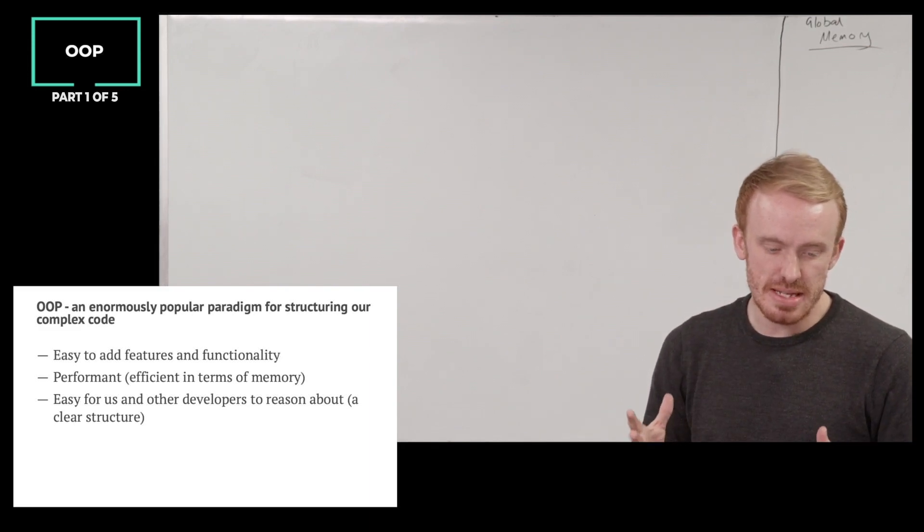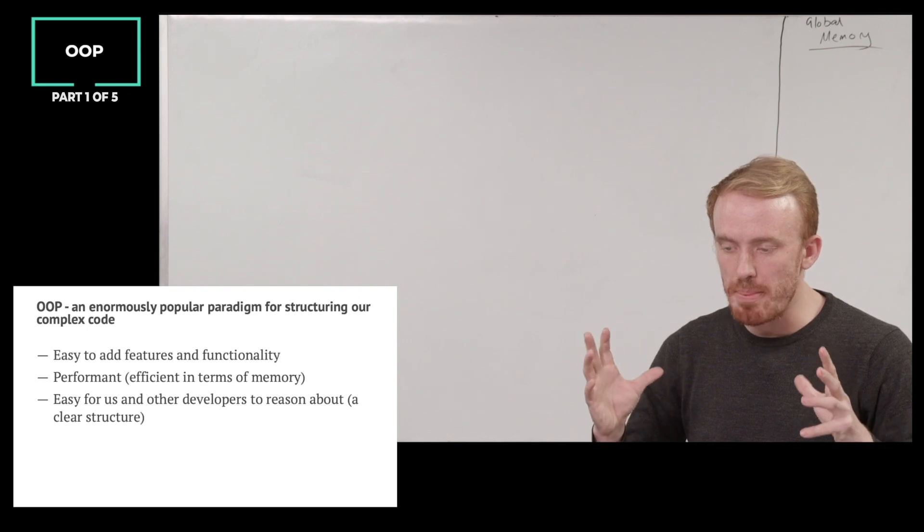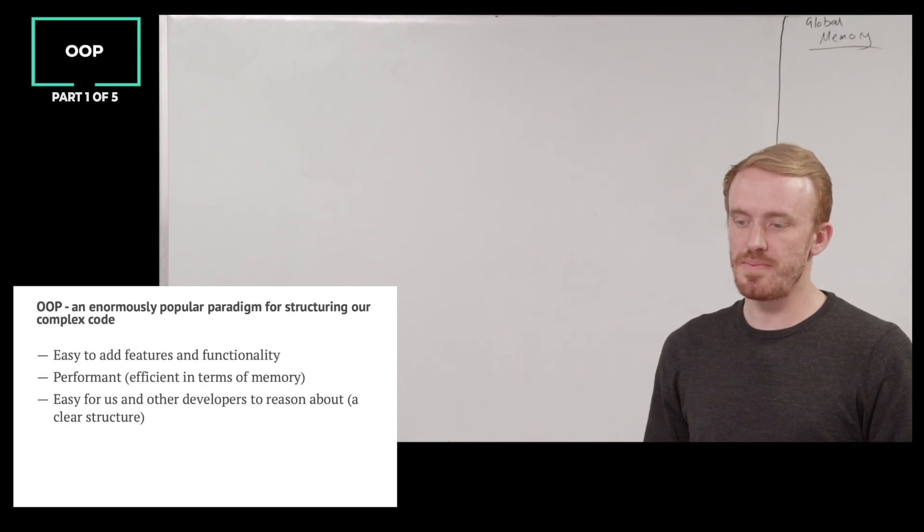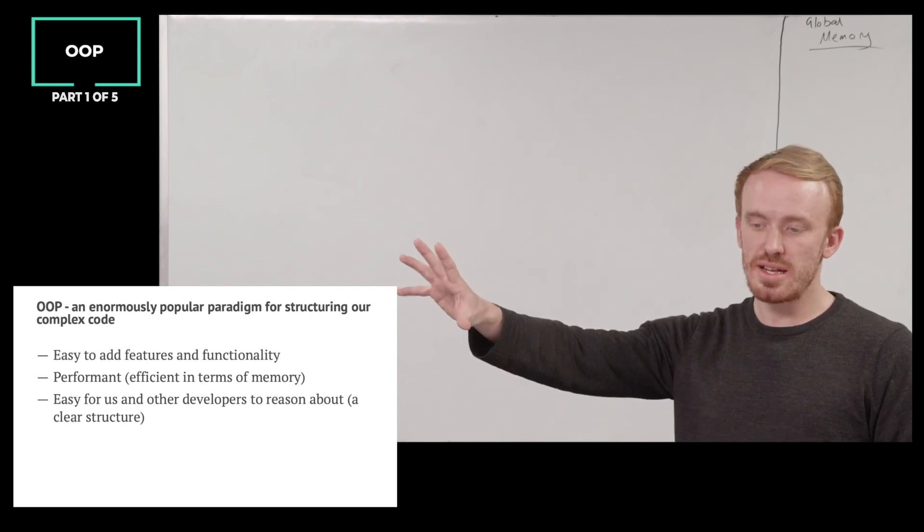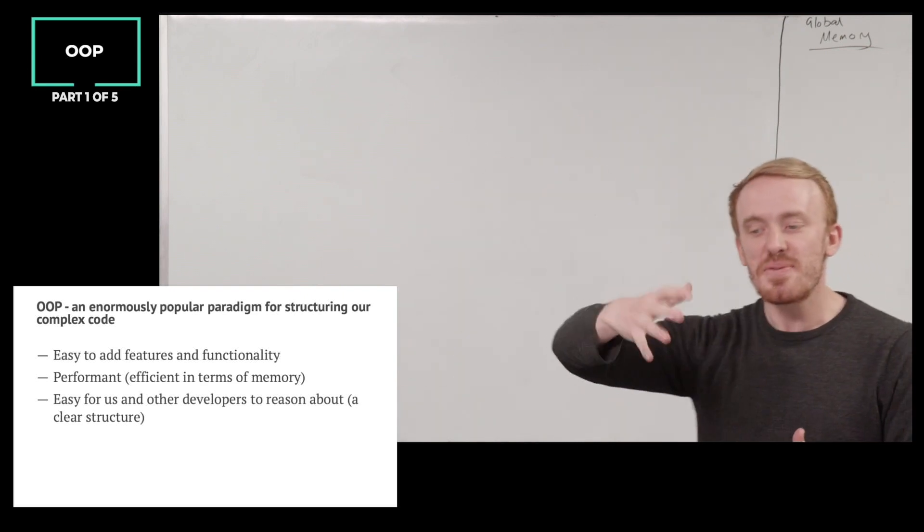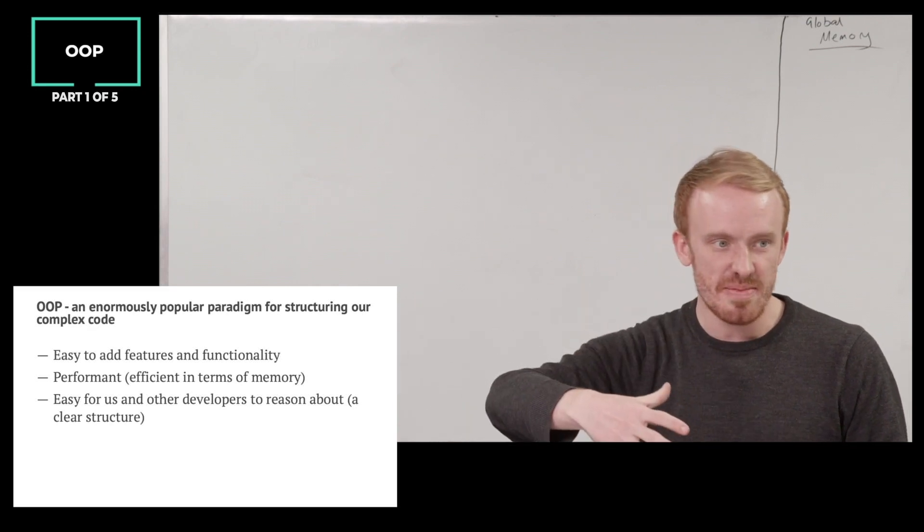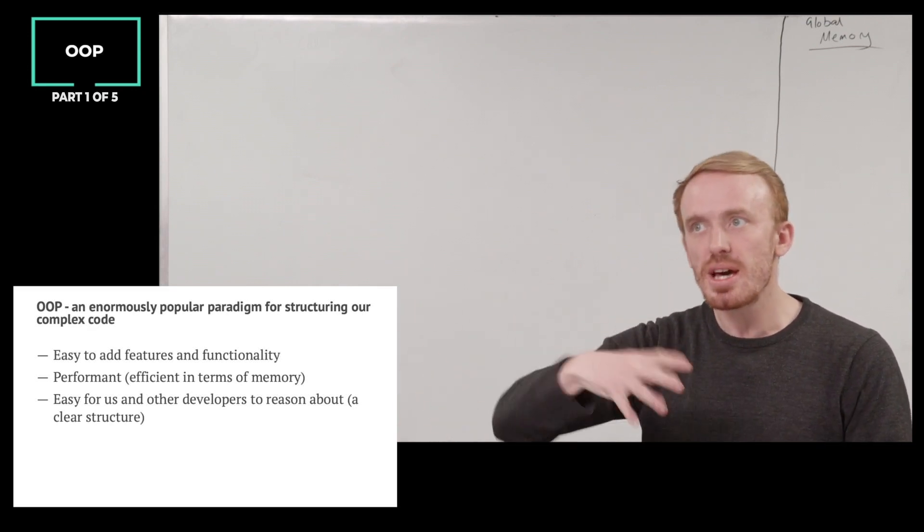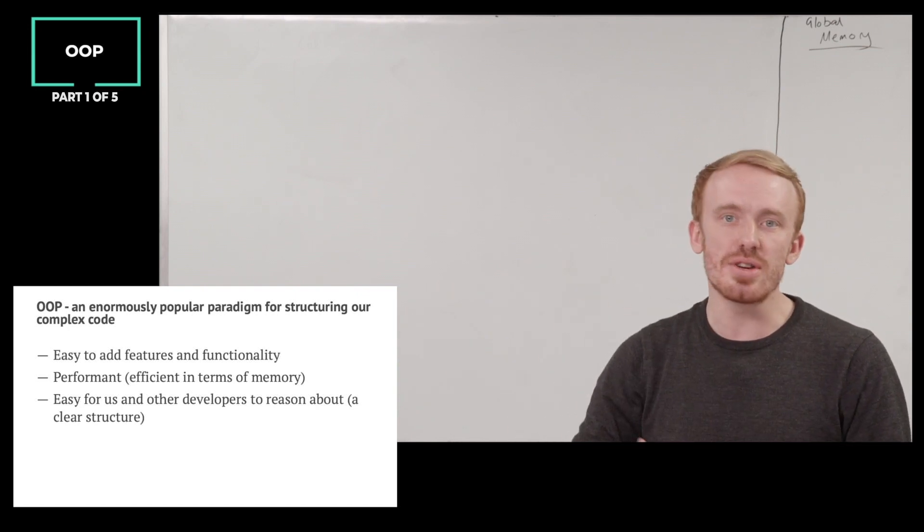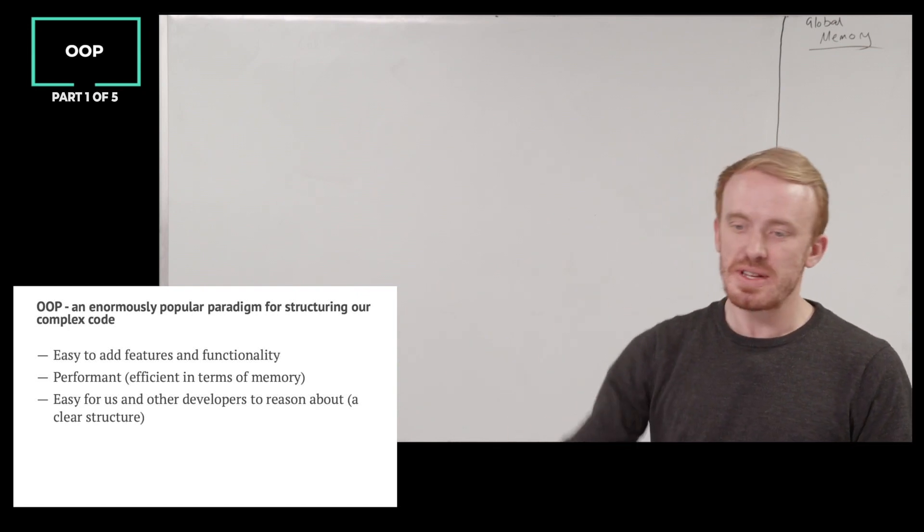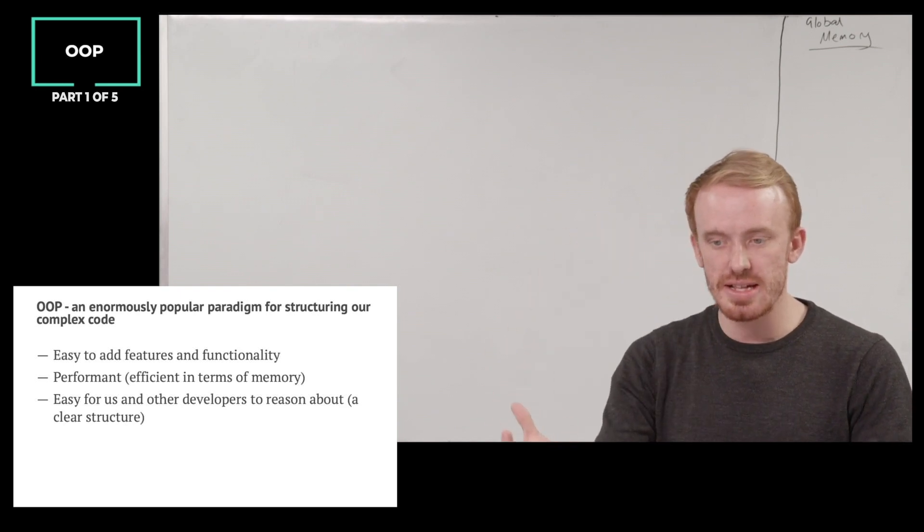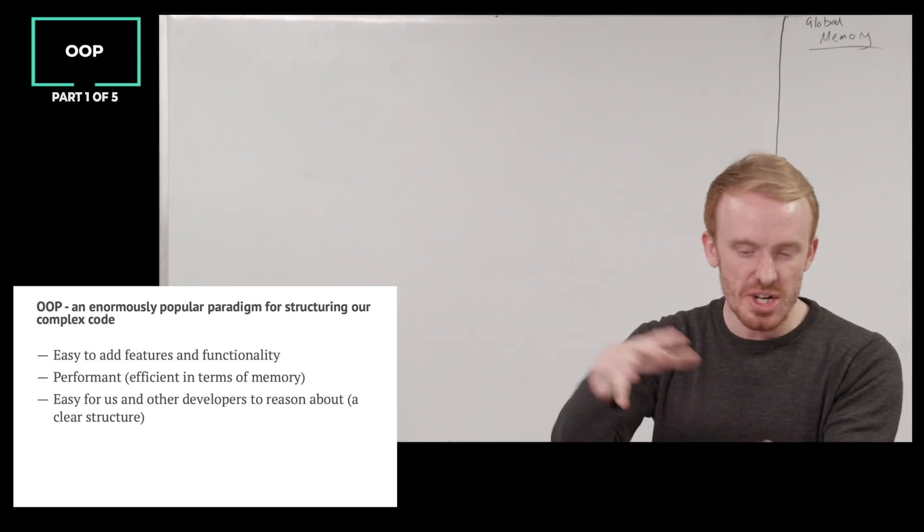So, object-oriented programming says, let's think about what we do when we write code. Essentially, we do two things. We store data in memory, and we apply functionality to data. In its heart, that's what we do when we write code. We store information, data, and we apply functionality to it. Now, don't get me wrong, it gets really complicated with lots of different functionality and lots of different data, but essentially we are writing functionality and data, and we're applying functionality to data.